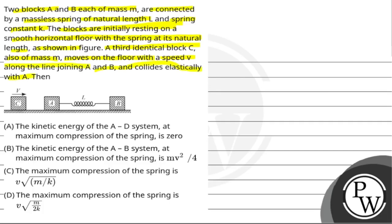Option A: kinetic energy of the AB system at maximum compression of the spring is zero. Option B: the kinetic energy of the AB system at maximum compression of the spring is mv² by 4. Option C: maximum compression of the spring is v times root of m by k. Option D: maximum compression of the spring is v times root of m by 2k.